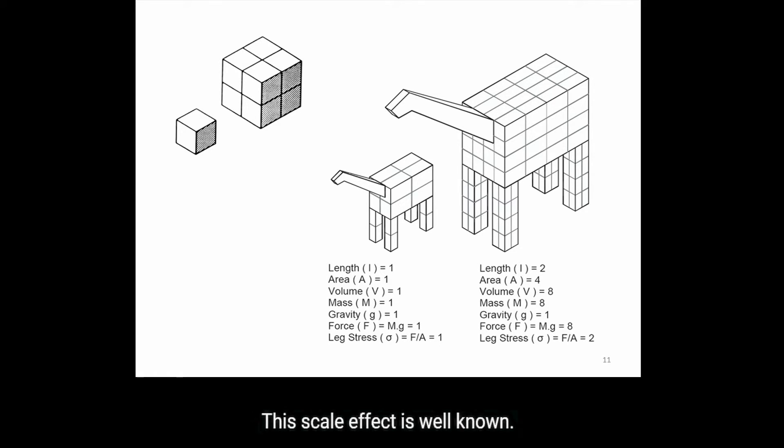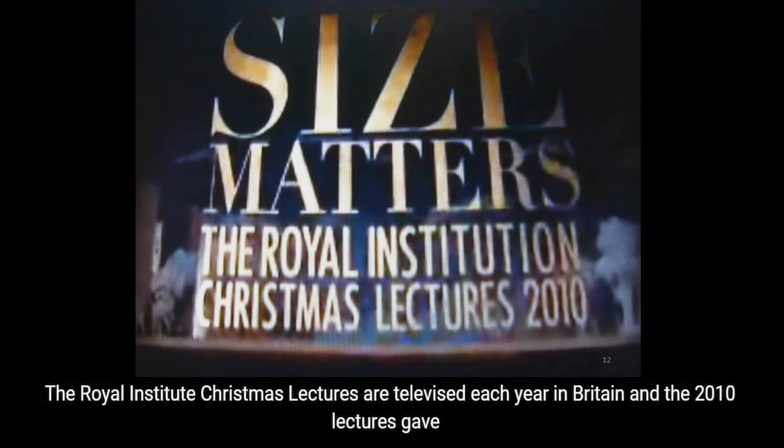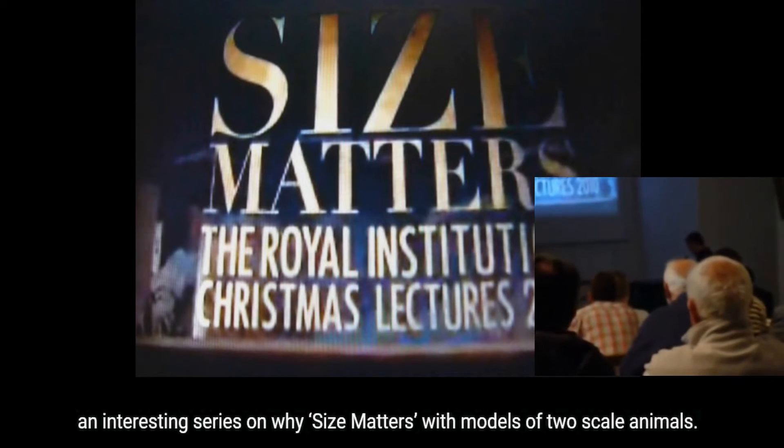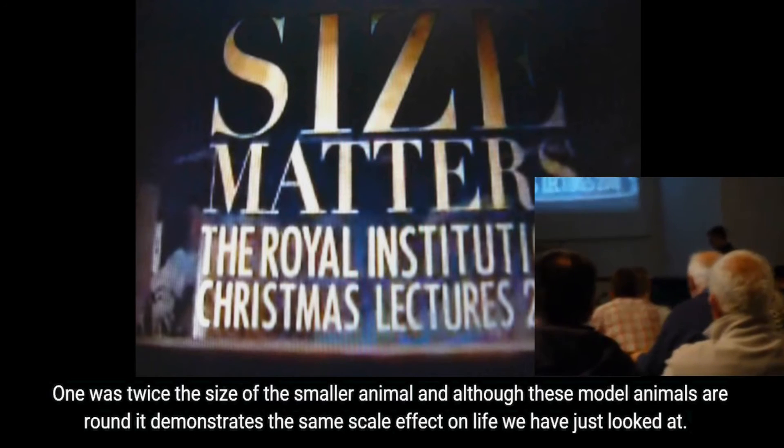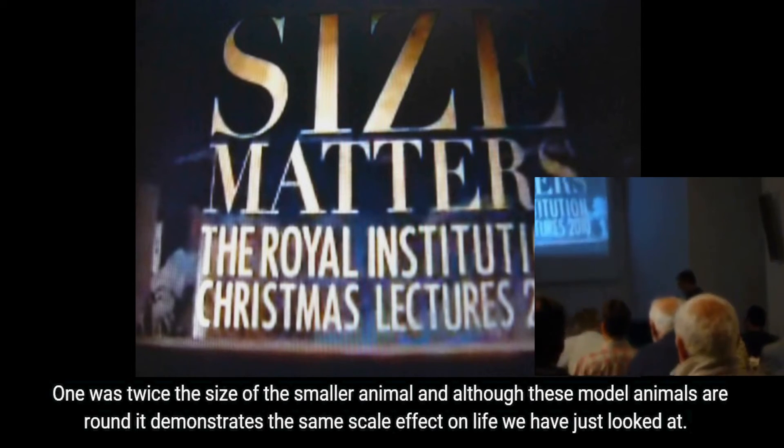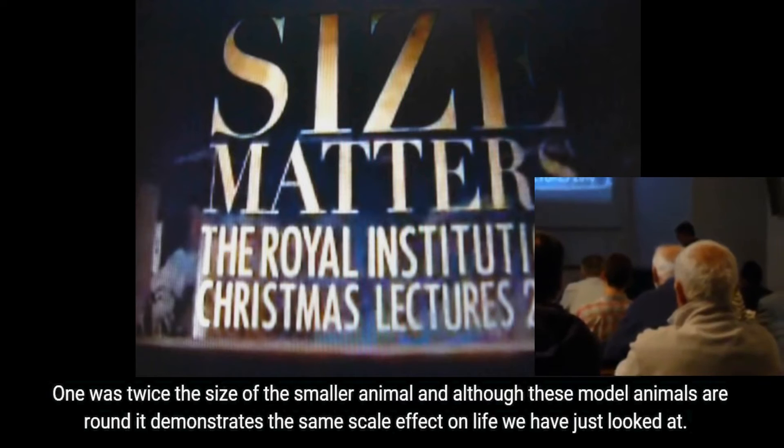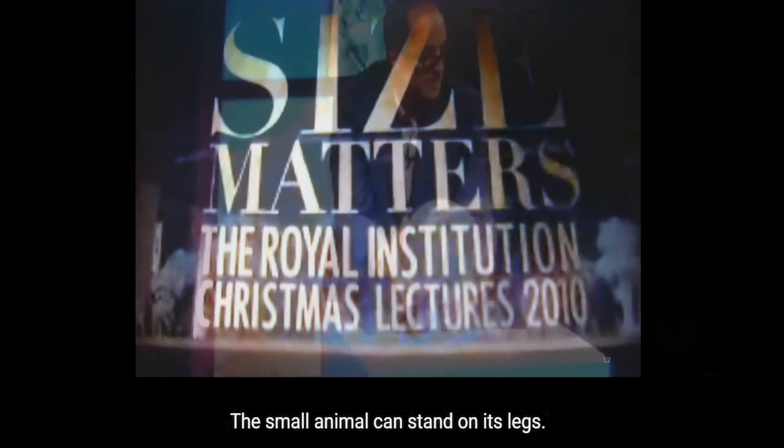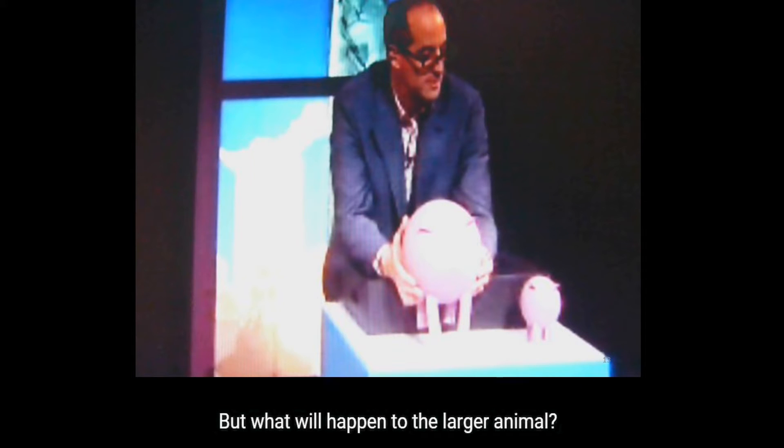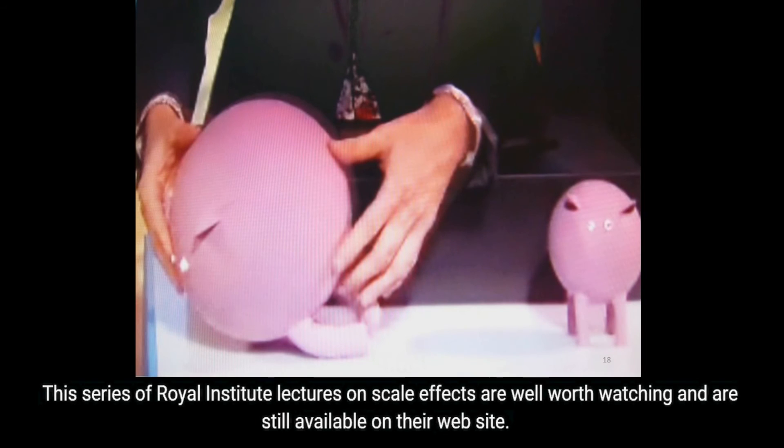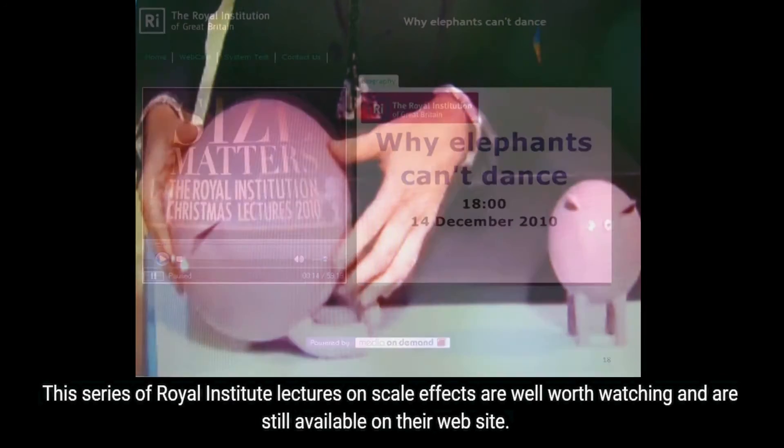This scale effect is well known. The Royal Institute Christmas lectures are televised each year in Britain, and the 2010 lectures gave an interesting series on why size matters with models of two scale animals. One was twice the size of the smaller animal. Although his model animals are round, it demonstrates the same scale effect on life we have just looked at. The small animal can stand on its legs, but what will happen to the larger animal? The legs collapse because of the scale effect. This series of Royal Institute lectures on scale effects are well worth watching and are still available on their website.